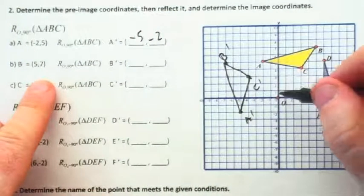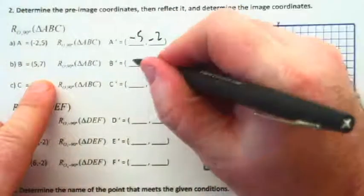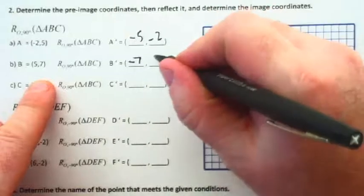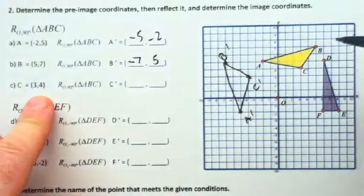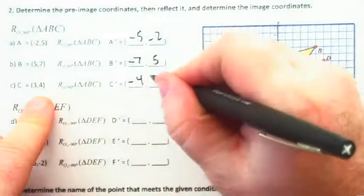Our location here is negative 7 and 5. And our location here is negative 4 and 3.